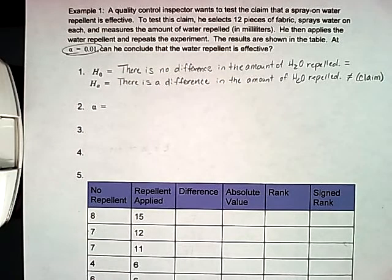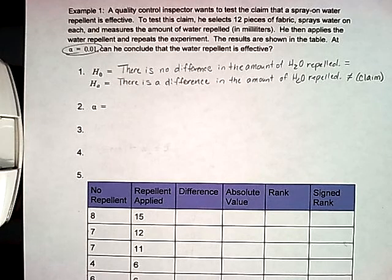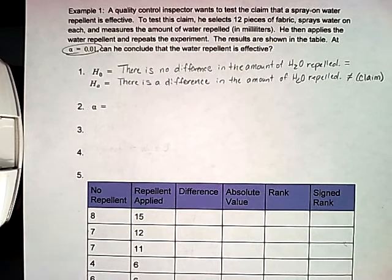This problem is a quality control inspector wants to test the claim that a spray-on water repellent is effective. To test this claim, he selects 12 pieces of fabric, sprays water on each, and measures the amount of water repelled in milliliters. He then applies the water repellent and repeats the experiment. The results are shown in the table below. At alpha equals 0.01, can he conclude that the water repellent is effective?